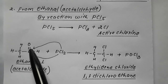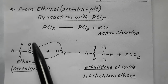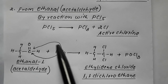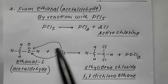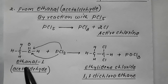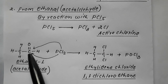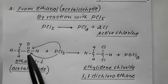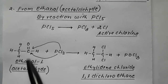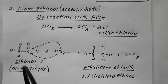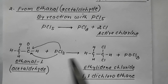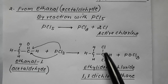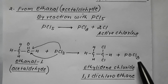One of the chlorines attaches to the carbonyl carbon, the oxygen is removed, and two valencies become vacant. One Cl attaches to one valency, another Cl attaches to the second valency — so both chlorines come onto the same carbon atom. The oxygen is replaced by two Cl atoms.